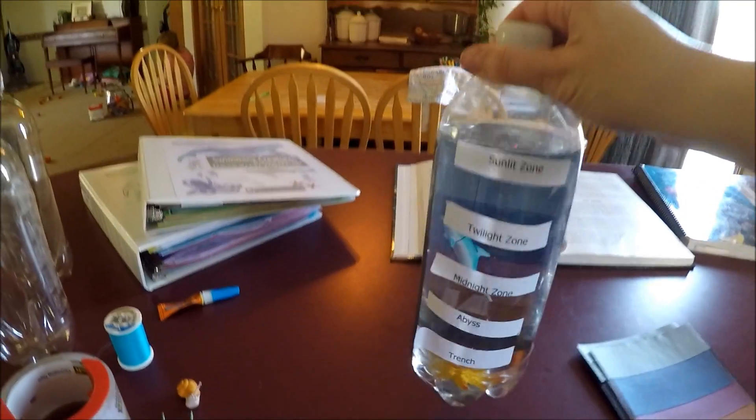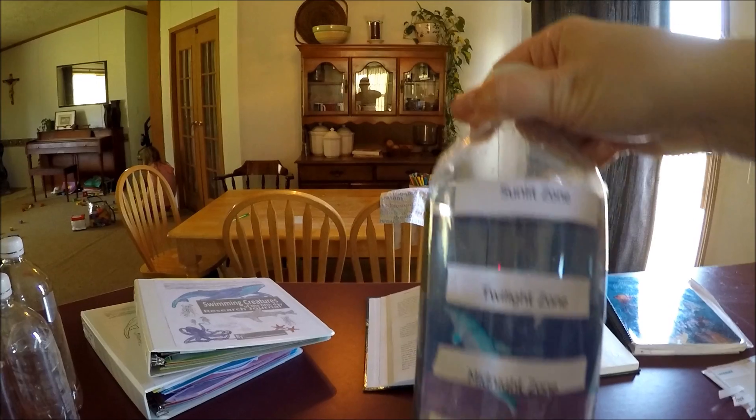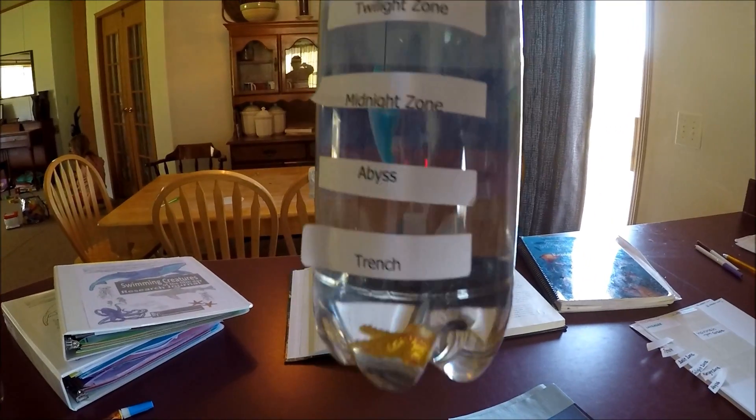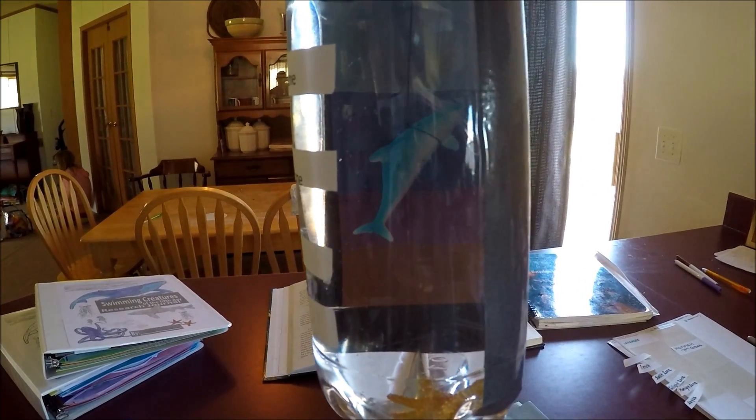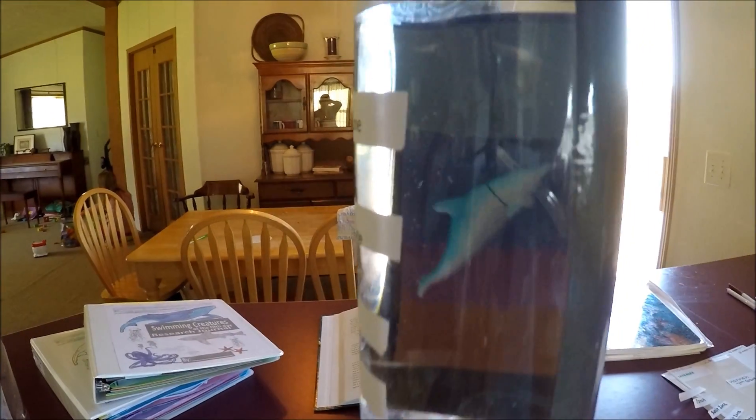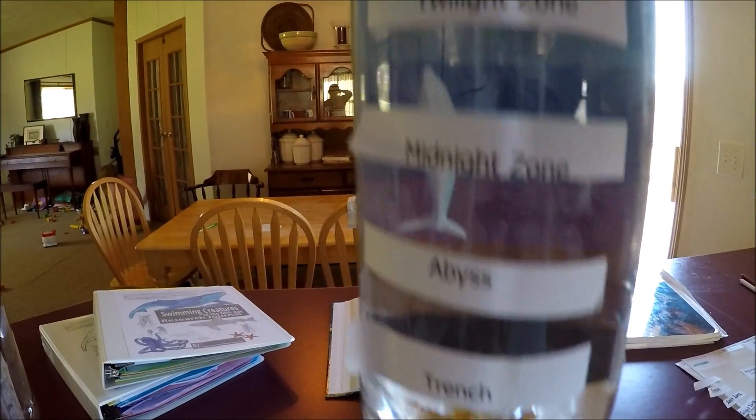Today I'm going to show you how to make an ocean zone bottle. As you can see, there's an animal floating in there, one on the bottom, and there's four layers of colors on the back and the zones on the front.